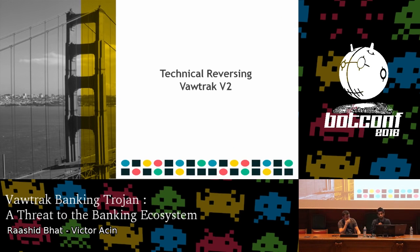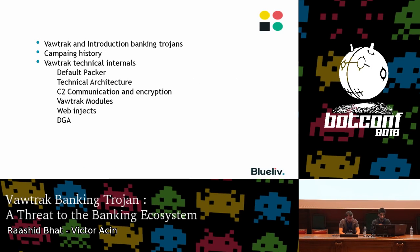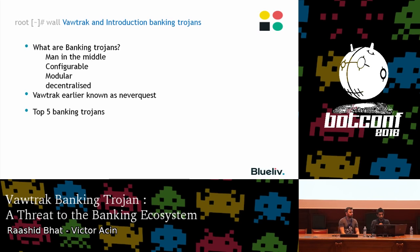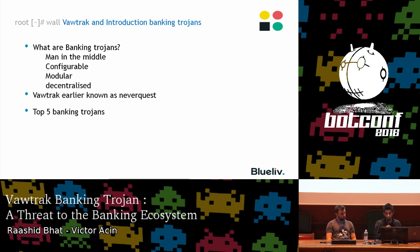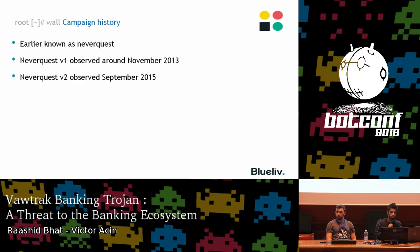First I'll be discussing the technical reversing of Vawtrak version 2, including the campaign history and internals regarding the Trojan. Vawtrak is a banking Trojan that performs man-in-the-browser attacks. It's configurable and modular. Some banking Trojans are decentralized — they don't have one particular command and control server; rather, they use proxies and low-level nodes to connect to top-level nodes. Vawtrak was initially known as NeverQuest, and it's among the top banking Trojans as of now. The earlier two versions were observed around November 2013 and then September 2015.